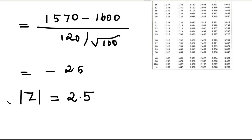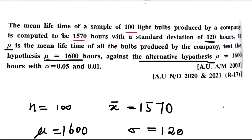Now we find the table value of Z to compare. We check the level of significance and whether it is one-tailed or two-tailed. The level of significance alpha is equal to 0.05 and 0.01. Since n equals 100, which is greater than 30, this is a large sample.